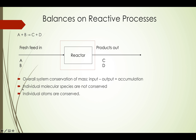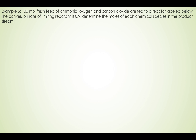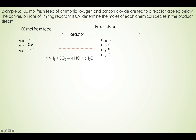But there's a way to write down a molecular species balance. For individual atoms, they're always conserved, and we're going to show how that works. In this example, 100 mole fresh feed of ammonia, oxygen, and carbon dioxide are fed to a reactor. The conversion rate of the limiting reactant is 0.9.